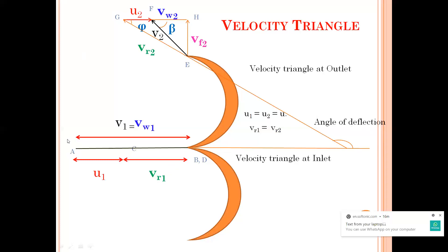At inlet we can see it is a horizontal line, and here your wheel runner is huge while your buckets are small. So I can assume u1 is equal to u2 is equal to u. Without shock it is very smooth — the shape of the bucket is very smooth. So I can assume that vr1 is equal to vr2.